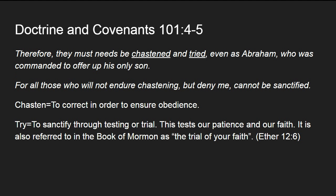We also learn in section 101 of the Doctrine and Covenants: 'Therefore, they must needs be chastened and tried, even as Abraham, who was commanded to offer up his only son. For all those who will not endure chastening, but deny me, cannot be sanctified.' Part of this proving means that we are chastened and we are tried — two separate parts. Chastening is to correct in order to ensure obedience. And once a person is chastened, they are tried — to be sanctified through testing or trial. This tests our patience and our faith, referred to in the Book of Mormon as the trial of your faith.